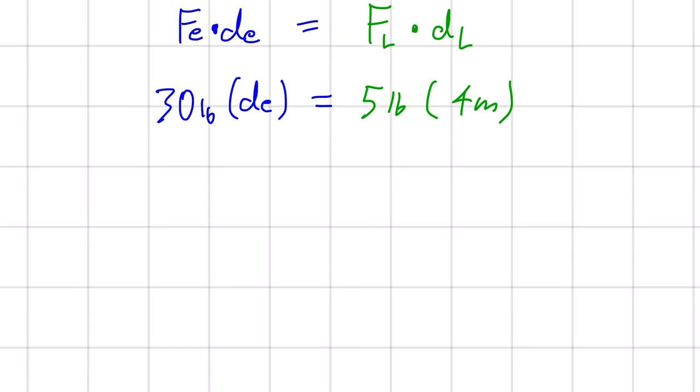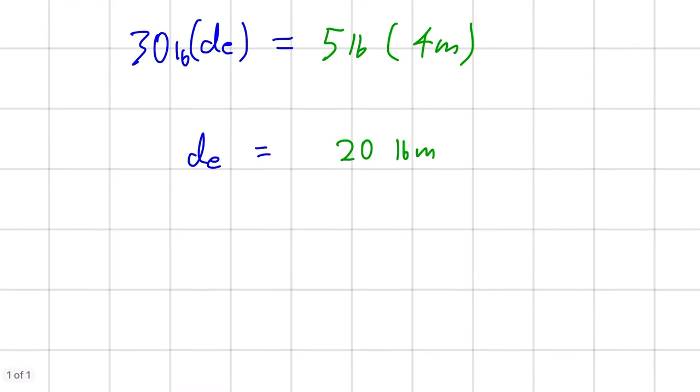And isolating for De, we have to bring this 30 pounds to the other side of the equation. So let's do that just like this. So distance of the effort is equal to this multiplication here. And there will be 20 pound meters divided by 30 pounds.